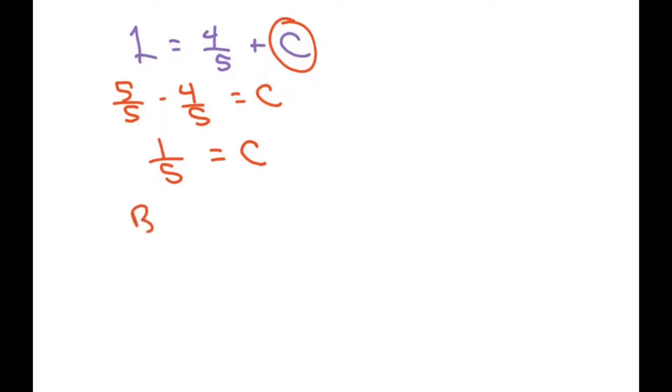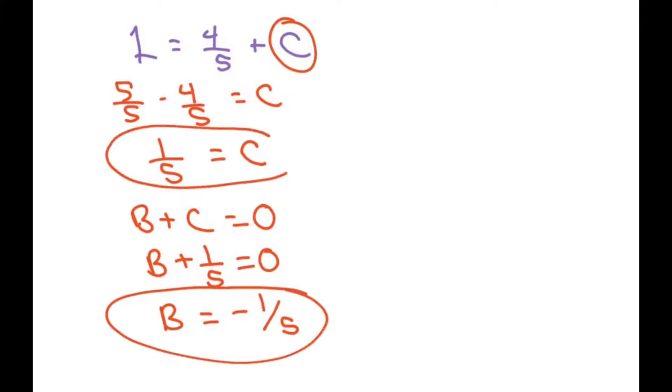Also, we already knew that B + C equals 0, so basically we have B + 1/5 equals 0, therefore B equals negative 1/5. So we have B, we have C, and we also have A already equals 1/5.